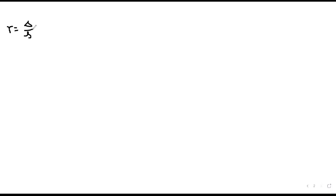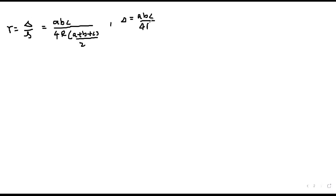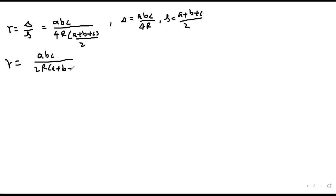We have proved that r is equal to Δ/s. Now we know that abc/(4R) = Δ, which means Δ equals abc/(4R), and s equals (a + b + c)/2. So substituting, r becomes abc divided by 2R·(a + b + c).